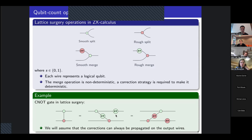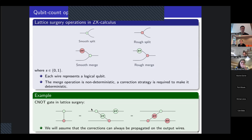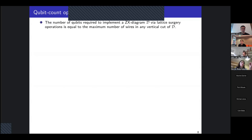To implement the CNOT gate in lattice surgery, you can do a green split then a red merge, or a red split followed by a green merge. In both cases this is not deterministic because of the merge operation. To make it deterministic, we need to apply a correction on the output qubit, symbolized by the conditional pi rotation. Here S is a measurement outcome — a Boolean zero or one. When S equals one, we perform a 2pi rotation, which equals the identity. We assume corrections can always be propagated on the output wires.